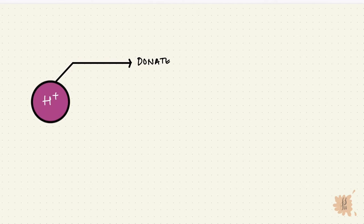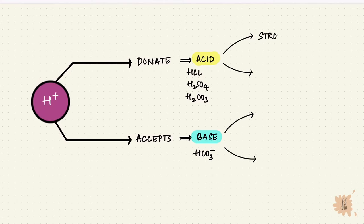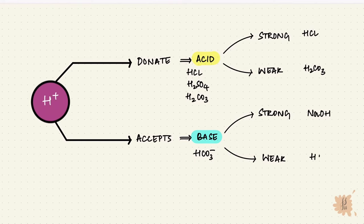Everything in human acid-base physiology surrounds the hydrogen ion. If a substance can donate a hydrogen ion, it's called an acid — like hydrochloric acid, sulfuric acid, or carbonic acid. If that substance accepts a hydrogen ion, it's called a base, like bicarbonate. Acids and bases can be strong or weak. A strong acid is hydrochloric acid and a strong base is sodium hydroxide. A weak acid is carbonic acid and a weak base is bicarbonate, and we use these two for acid-base regulation.